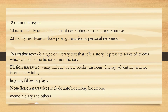Texts are written for a variety of purposes using different forms and standards of composition. These forms of writing are known as text types. There are two main text types: factual and literary. Factual text types include factual description, recount, or persuasive. Literary text types include poetry, narrative, or personal response.